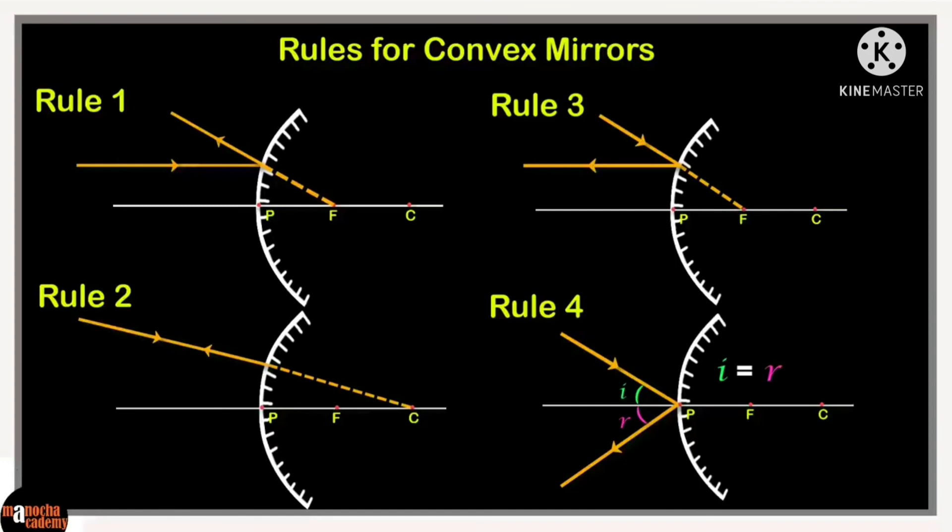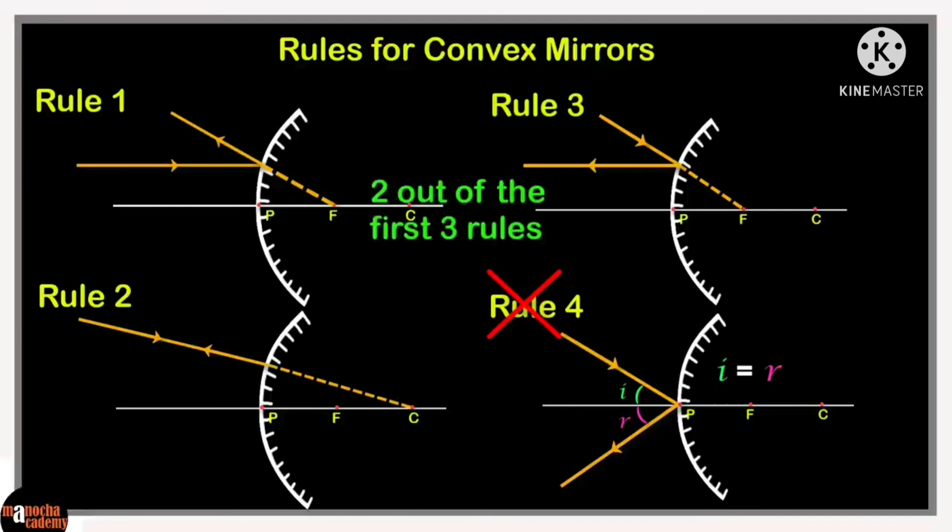Let's place the rules that we have learned for convex mirrors on our concept board. Similar to concave mirrors, avoid using the fourth rule unless really necessary because measuring angles accurately with your protractor is hard and can lead to inaccuracies in your diagram. Basically, you need to select two out of the first three rules for convex mirrors.